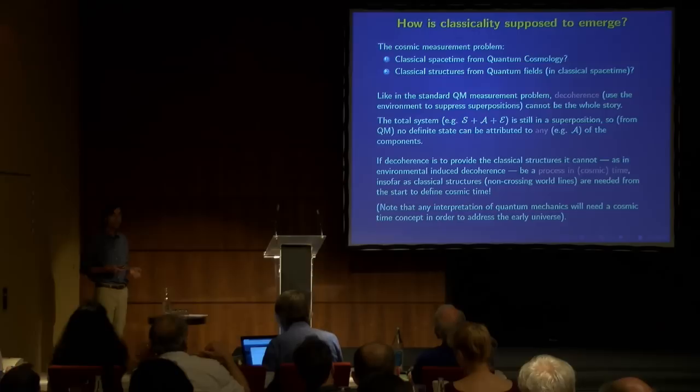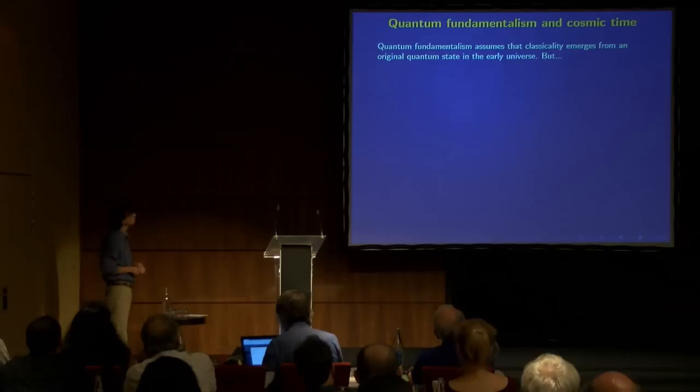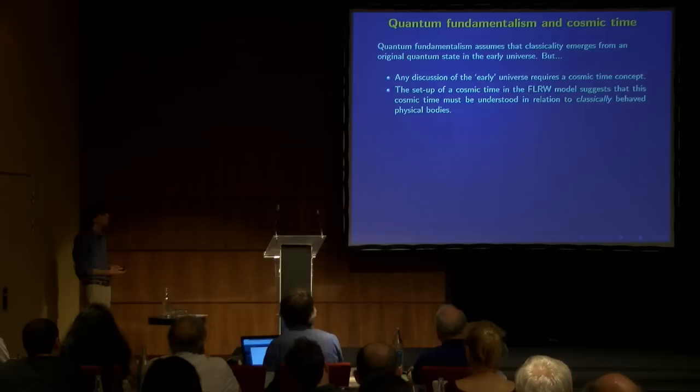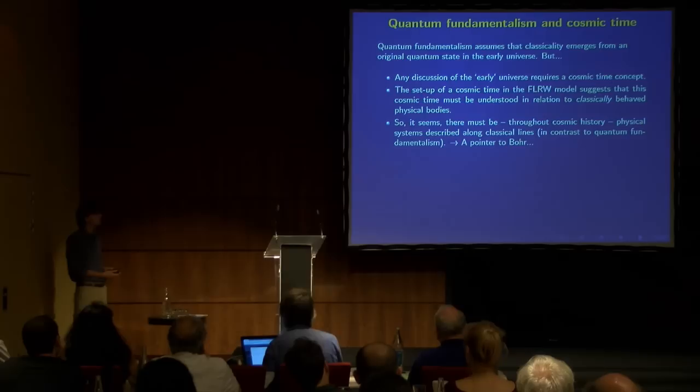That is, the idea is, if decoherence is what is supposed to give you the classicality, and that's supposed to happen in cosmic time, then that cannot be right if cosmic time already presupposes classicality. And note that this is interpretation independent. Any interpretation of quantum mechanics will, of course, need a cosmic time concept in order to address, in order to be relevant for the early universe. Early is a temporal word. An early universe is something we define in terms of cosmic time. So, quantum fundamentalism, the idea that everything is quantum, assumes that classicality emerges from an original quantum state in the early universe. But, any discussion of the early universe requires a cosmic time concept. I'm sure we can agree on that. The setup of a cosmic time in the standard model suggests that this cosmic time must be understood in relation to classically behaved physical bodies. These world lines that we're talking about. And so it seems that there must be, throughout cosmic history, physical systems described along classical lines, in contrast to quantum fundamentalism.